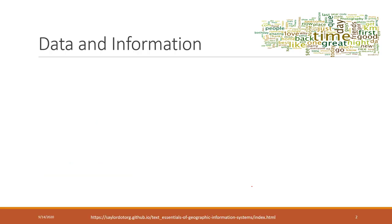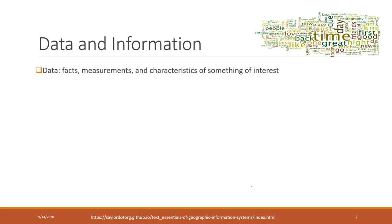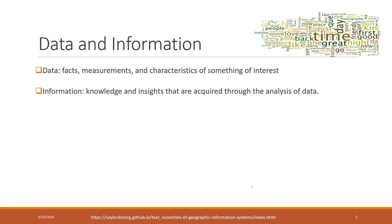Before continuing, I want to introduce some concepts about data and information, which are also listed in our textbook. Data are simply the facts and measures of something of interest — for example, census population data that we'll view next week. Information is the knowledge and insight acquired through analysis of the data.